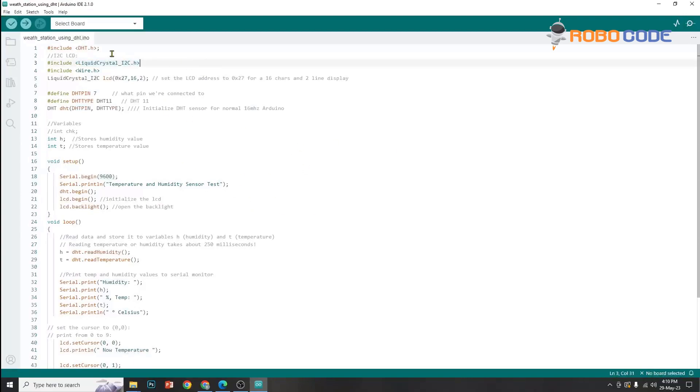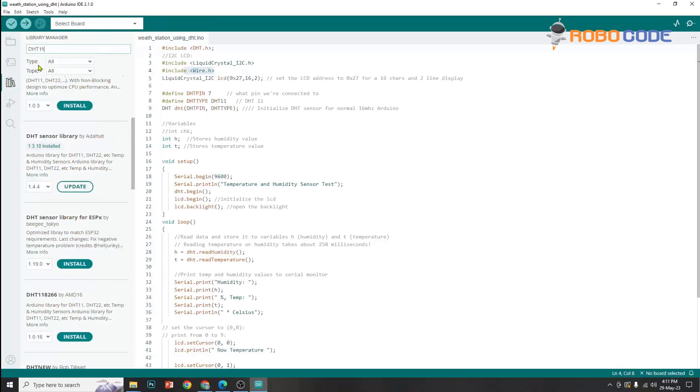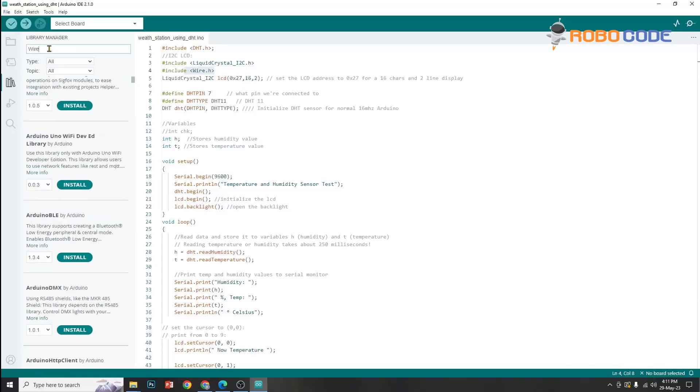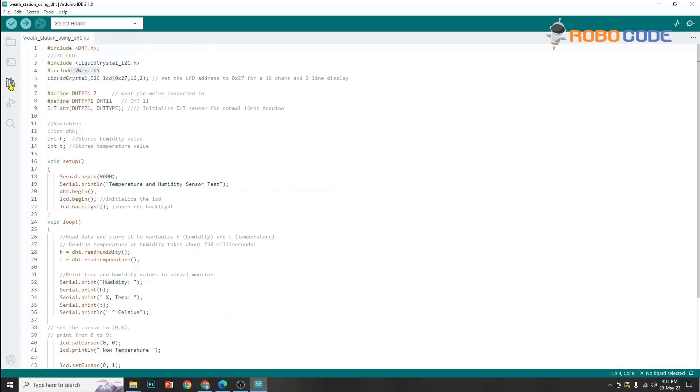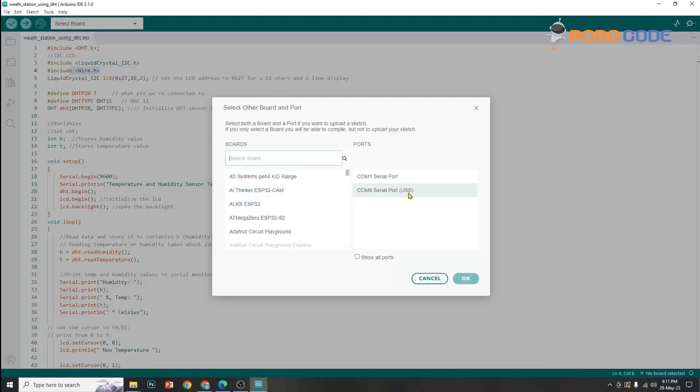Then we will search for one more library which is called Wire. So we will search for Wire in the library manager and we will locate Adafruit NeoPixel. In our case it is already installed so we don't need to install, but if it says install button then let's install Adafruit NeoPixel.